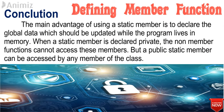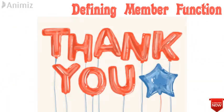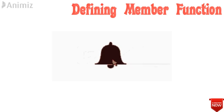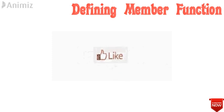The main advantage of using a static member is to declare global data which should be updated while the program lives in memory. When a static member is declared private, non-member functions cannot access these members, but a public static member can be accessed by any member of the class. If this video has helped you understand the concept, consider subscribing so that you don't miss upcoming videos. Check the description as I have provided links to other related videos.